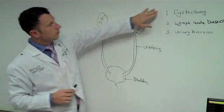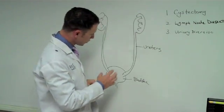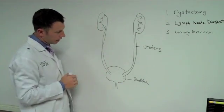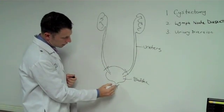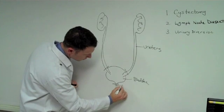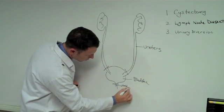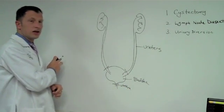So during the first step, which is the cystectomy, we're going to actually remove the bladder here. So we transect the ureters and the urethra. And all of that is then taken out.